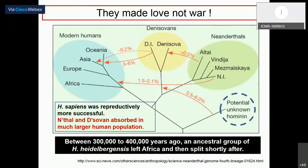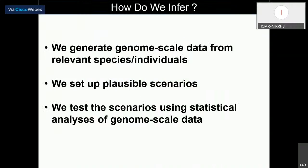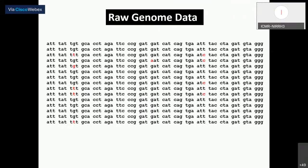The Neanderthals and Denisovans were reproductively less successful and were absorbed into the much larger human population. We generate genome-scale data from relevant species or individuals, set up plausible scenarios — such as whether we killed them or absorbed them — and test these scenarios using statistical analysis of genome-scale data. The raw genome data shows that each row corresponds to an individual, and with respect to certain positions it is all the same — those are called monomorphic positions. Where there are differences in the nucleotide at a position, those are called polymorphic positions.